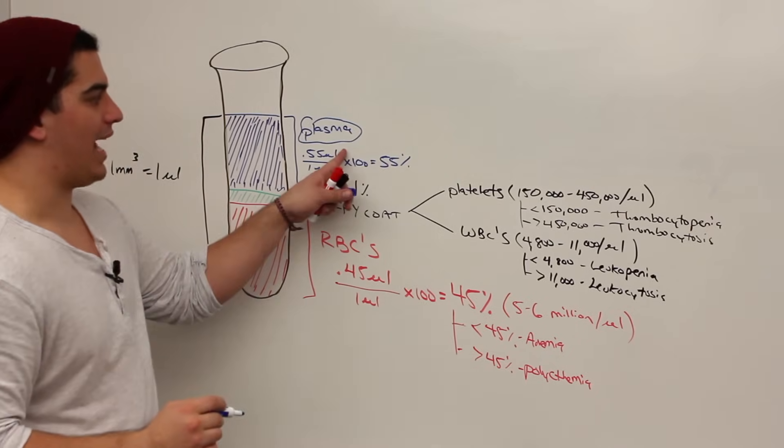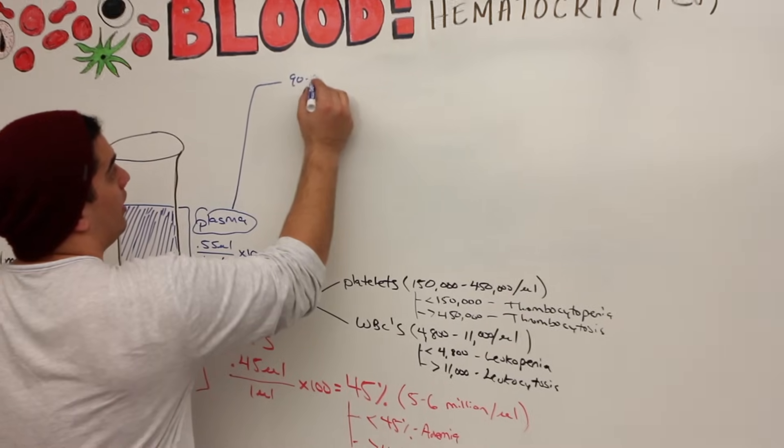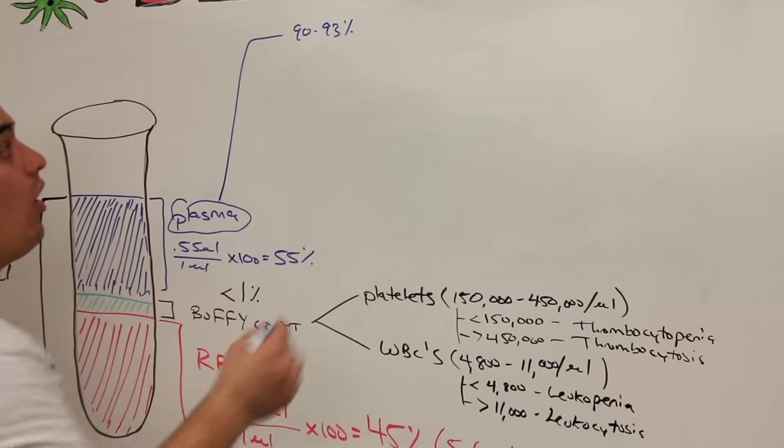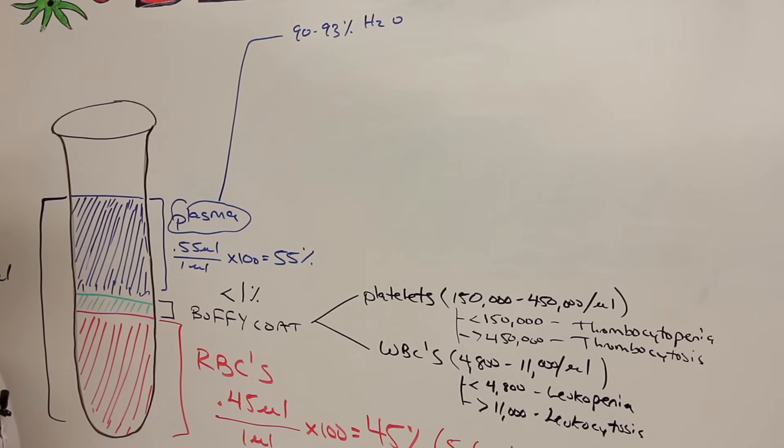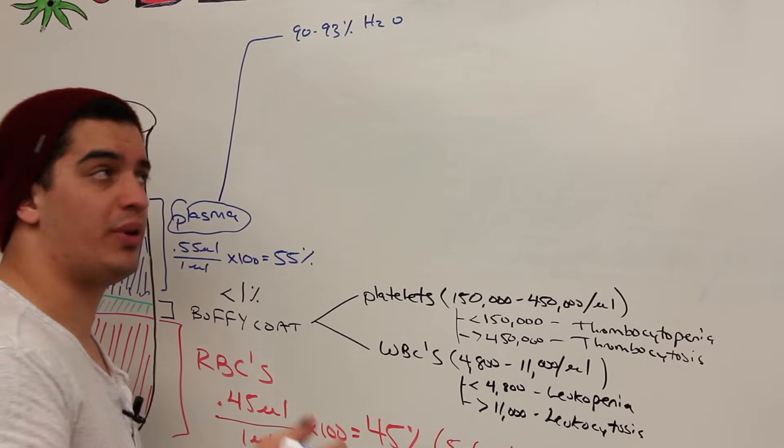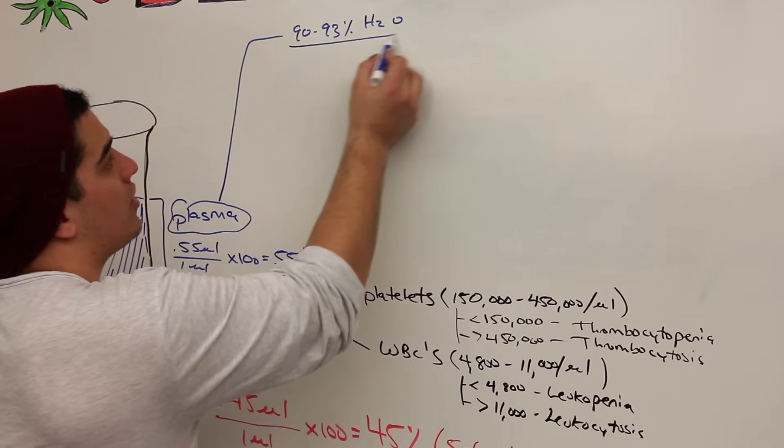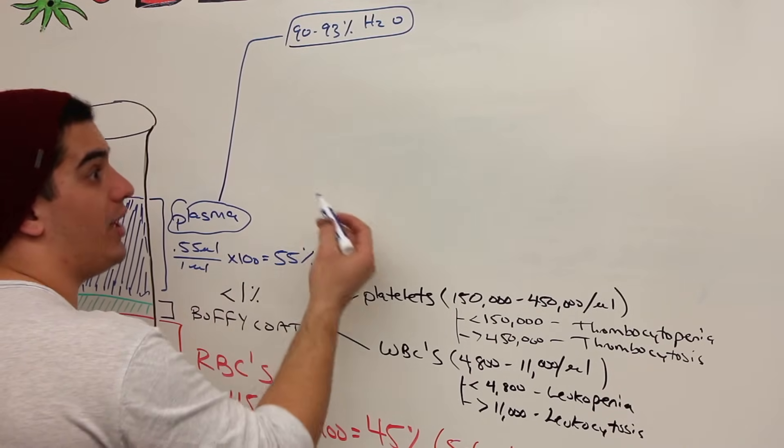So now plasma, what is the components of plasma? Well, the components of plasma mainly are water. So about 90 to 93% of it is actually just water. Why is water so important? Because it's a universal solvent, it's what helps to be able to transport our red blood cells, it's good at dissolving certain types of solutes and proteins and molecules and nutrients within the actual blood vessel. So it's a very important solvent, we absolutely need water. It controls our blood volume and our blood pressure, so many things.